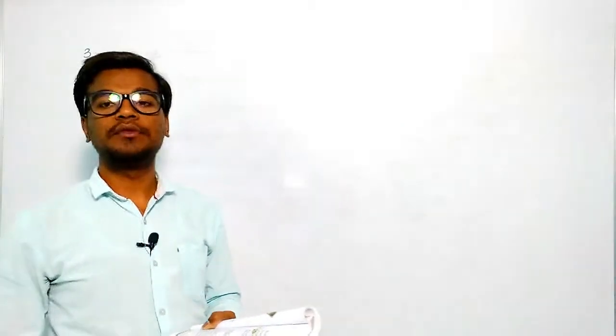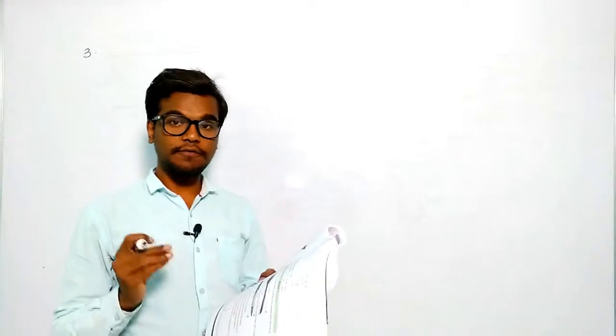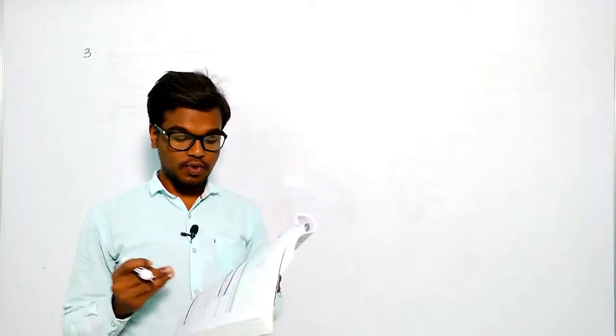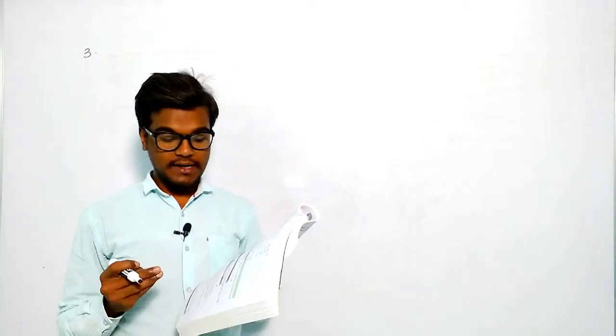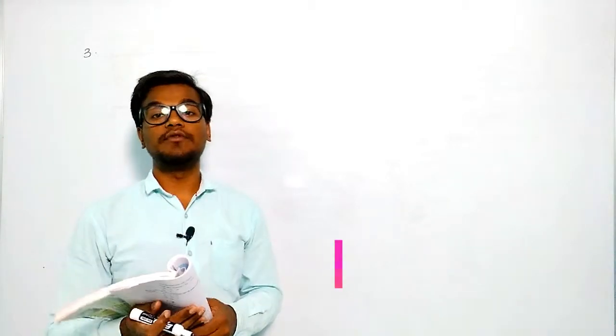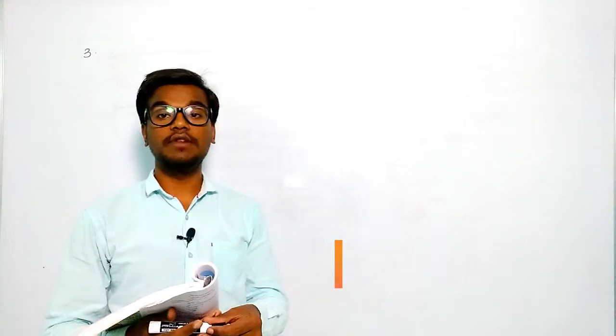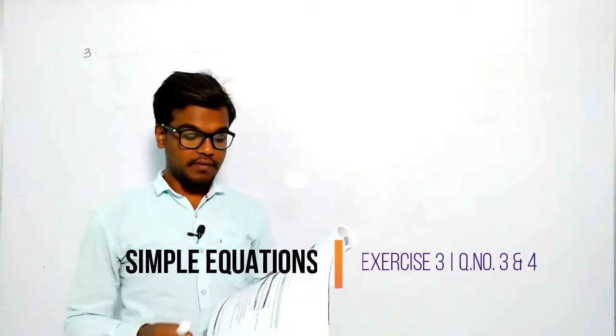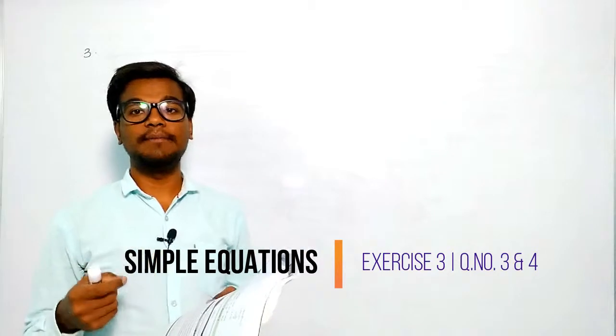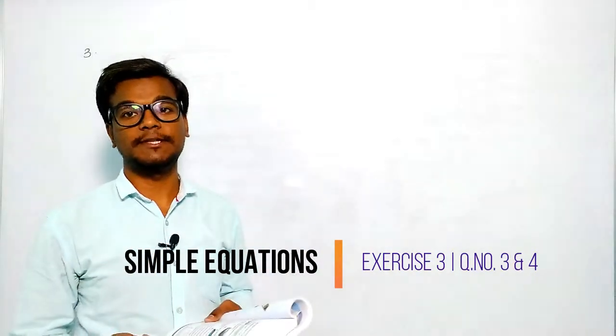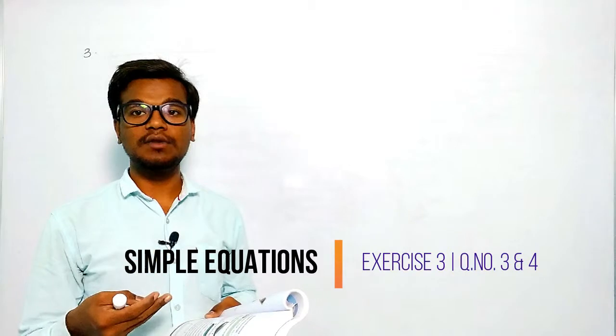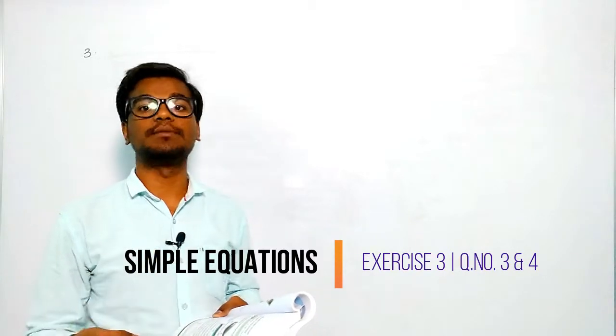Hello viewers. In this module we will discuss exercise 3, third question. Our question is: if we add 7 to twice a number we get 49, find the number. Before going to discuss, first we need to think about the question — what is the number we need to take, and by that number what is being added, subtracted, or divided to get the result.